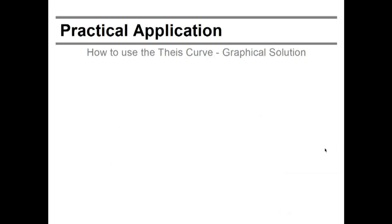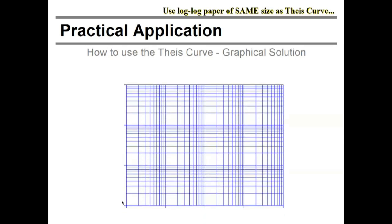So now we're going to go to the practical application, the absolutely stunning way how Lubin and Theis solve this non-equilibrium problem. For that to work, you need to have some pumping data. First of all, and that is very important, you need to use a graph paper of the same size, physical size, as the paper you plotted your standard Theis curve on. So the graph paper needs to be the same size, same inches in one direction and the same inches in the other direction. It's very important.